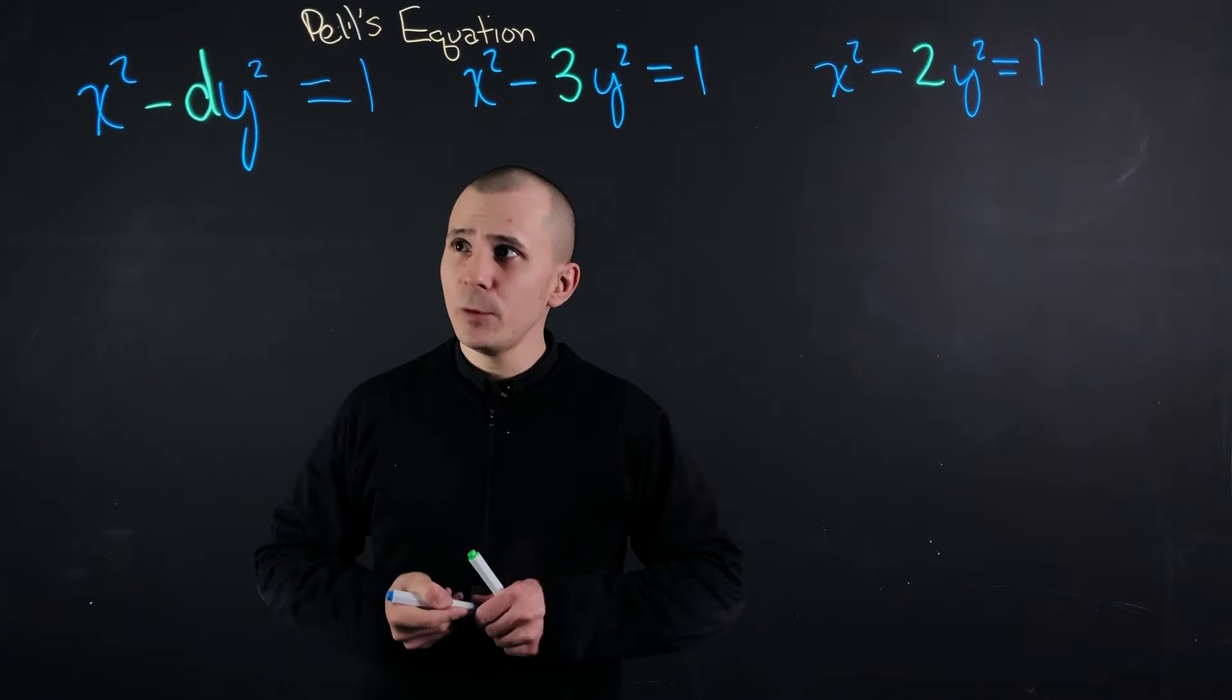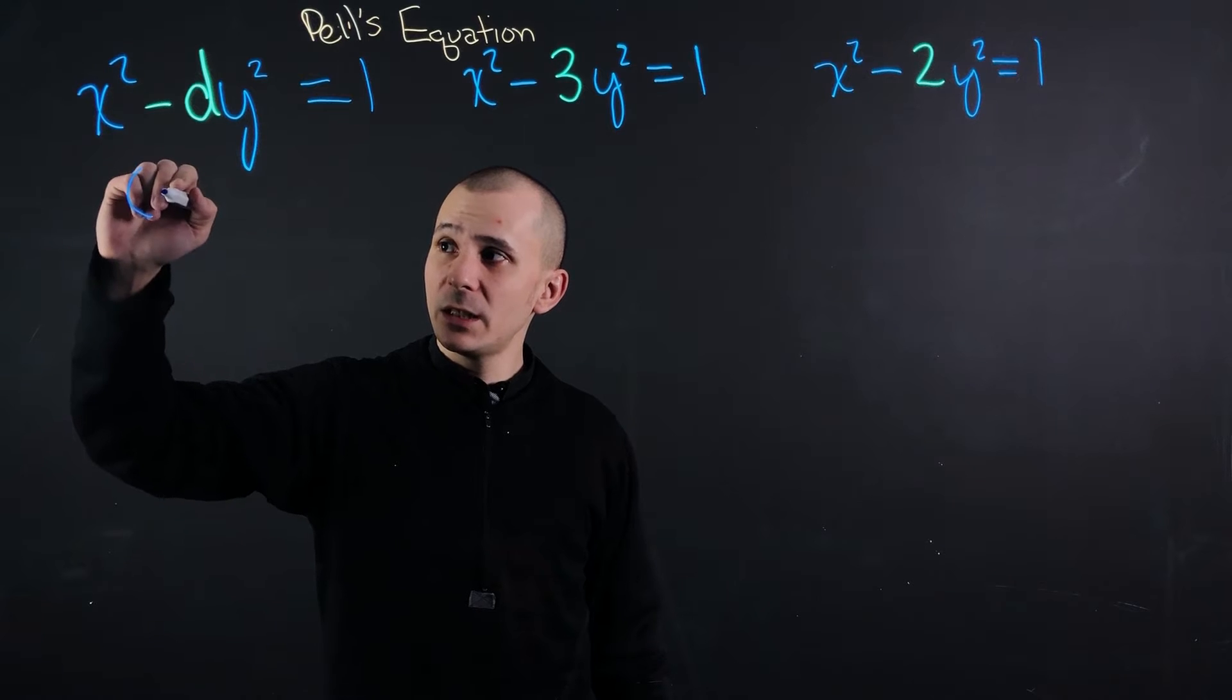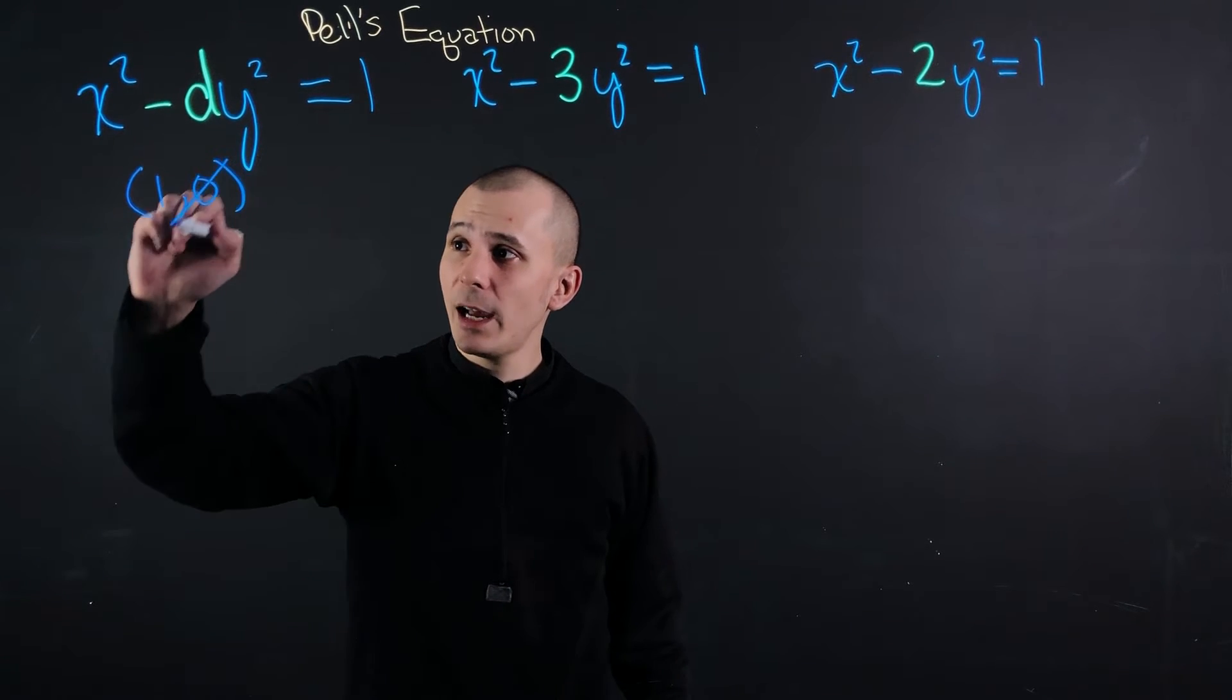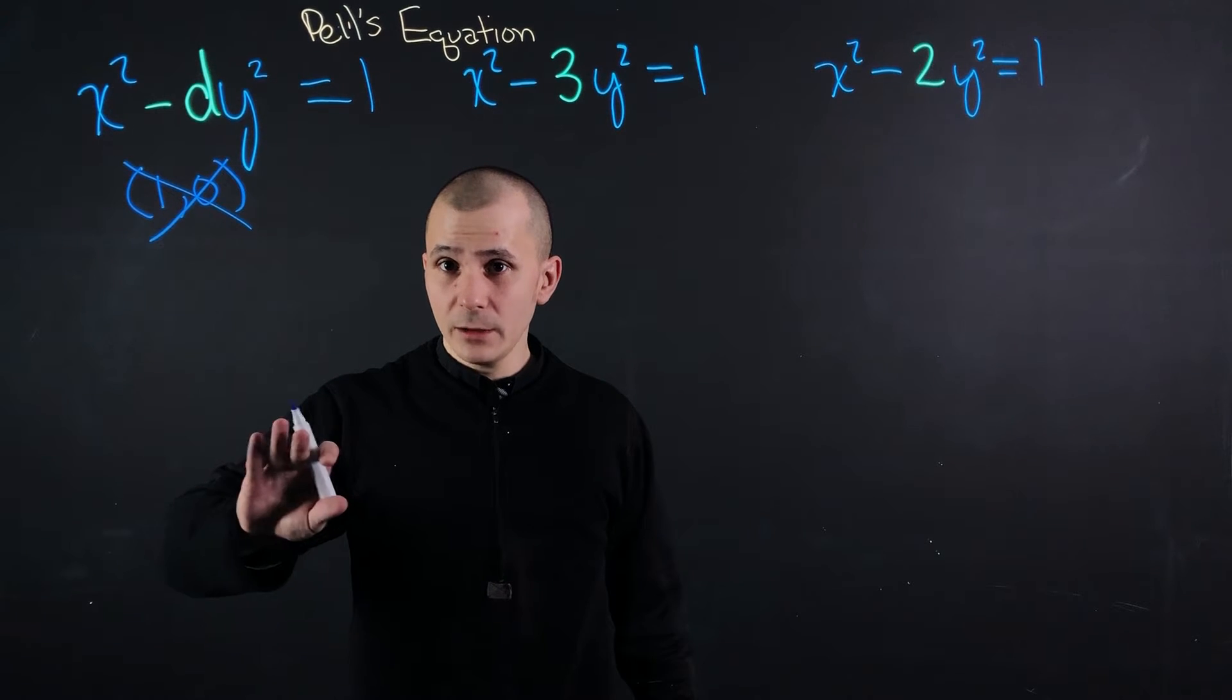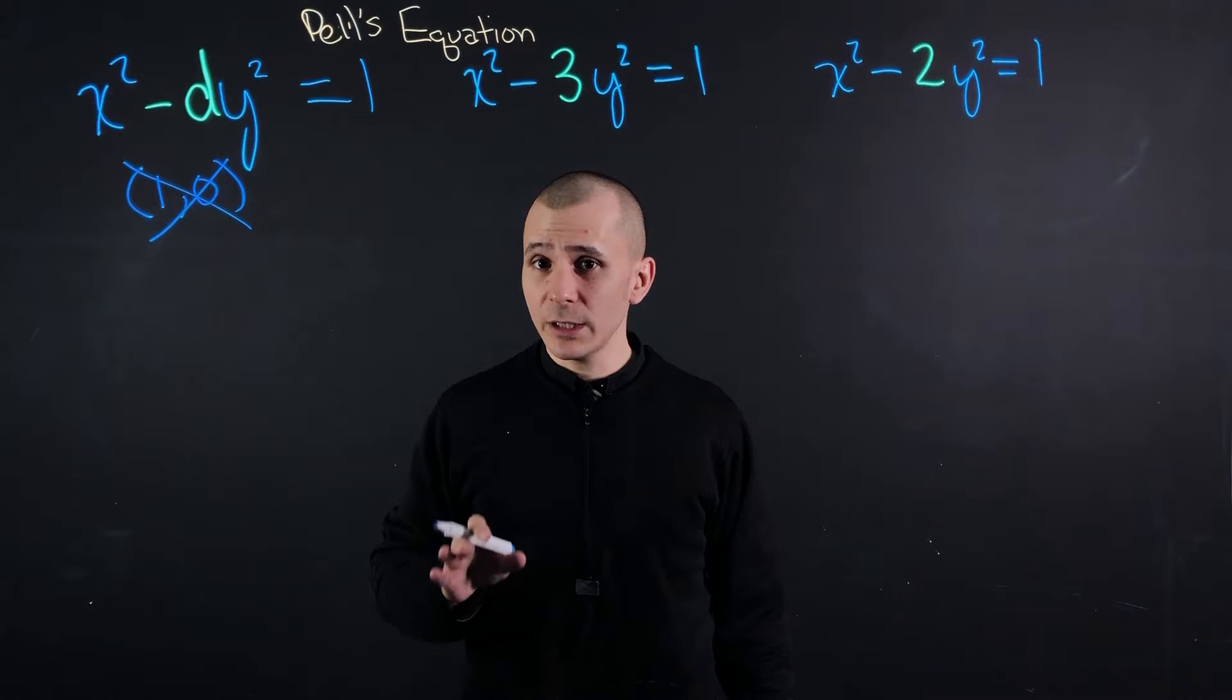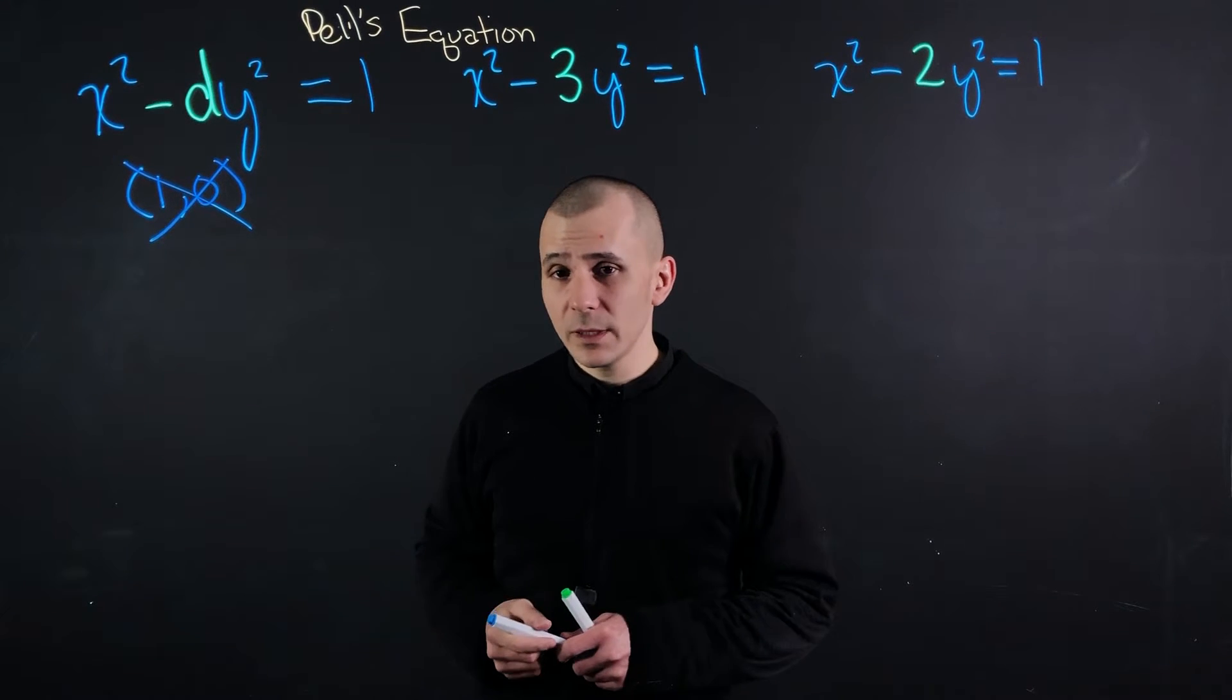Of course one of the most rudimentary answers that we can come up with to fulfill this is going to be 1 and 0, but this is arbitrary and we do not ever want to use it, especially when we're trying to solve for further sequential solutions to this problem. So what can we do? Well let's talk about that.